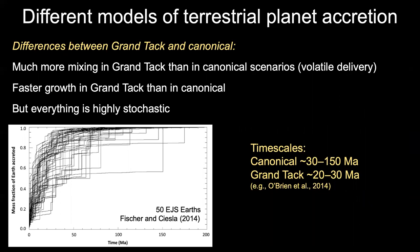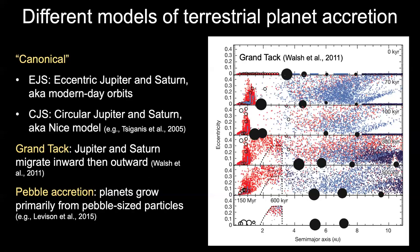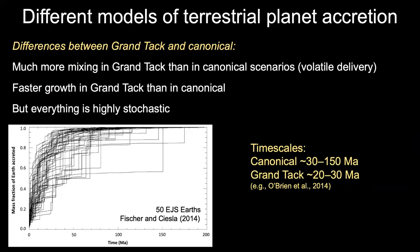What are the differences between the two? The first big difference is that you get much more mixing in the grand tack scenario than in canonical scenarios. When Jupiter and Saturn migrate, there's a huge scattering of planetesimals and things get really well mixed, erasing some of that initial gradient. In the canonical scenario there's certainly mixing, but it's not nearly as extreme. This will have implications for volatile delivery — both how much is delivered and the timing.